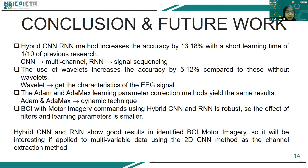The next is conclusion and future works. From this research, it can be concluded that the hybrid CNN-RNN method increased accuracy by 13.18% with shorter learning time because CNN handles multi-channel and RNN keeps the sequence. Also, the use of wavelets can increase accuracy compared to without wavelets because it focuses on the required information only. The use of optimization is less influential, but ADAM and AdamX use the same dynamic technique; the model is robust so filter and learning parameters have less effect. It will be interesting if applied to multivariable data using the 2D CNN method as the channel extraction method.